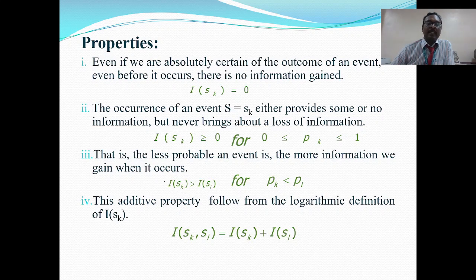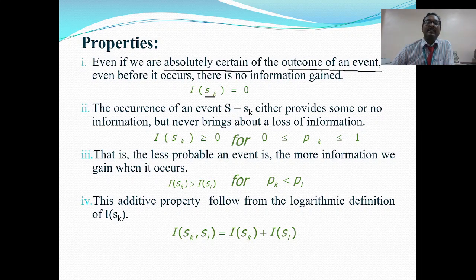Now let us see the properties of information theory. Property 1: I(Sk) equals 0. Information pertaining to event Sk is equal to 0 for an absolutely certain event — a daily-happening event, like the sun rises in the east. This is a well-known fact. The outcome of an absolutely certain event is known even before it occurs — tomorrow morning everyone knows the sun will rise in the east. So that event carries no high information; there is no information gain. I(Sk) = 0 for an absolutely certain event.